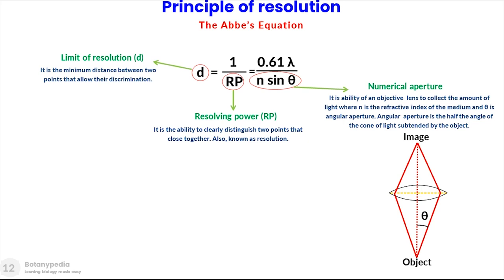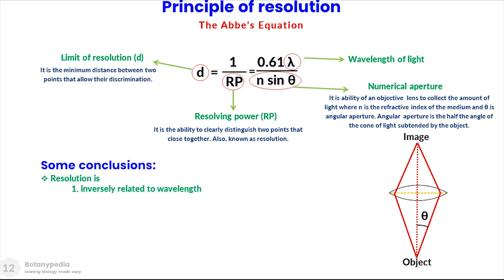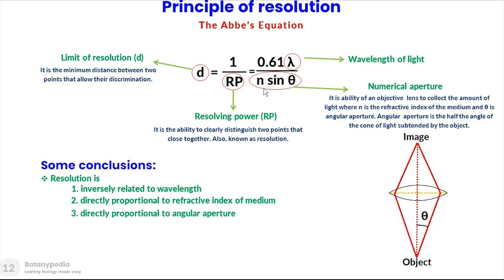It is important to mention that n is the refractive index of the medium and it greatly influences the resolving power of the microscope. The angular aperture is defined as half the angle of the cone of light subtended by the object. Lambda refers to the wavelength of light used for illumination. From this equation we can conclude that resolving power is inversely related to wavelength of light, directly proportional to the refractive index of the medium, directly proportional to the numerical aperture, and inversely related to the limit of resolution.